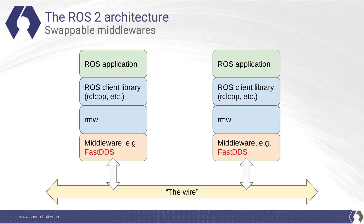One of the interesting things about this abstraction of the middleware is that the middleware itself is swappable. For example, you could swap out CycloneDDS and use FastDDS instead. It's not just DDS either — you can use other middlewares. We see people using a middleware called ECAL, which is from the Continental Motor Company. And in our case, what we're interested in is perhaps swapping out the middleware and using Zenoh.